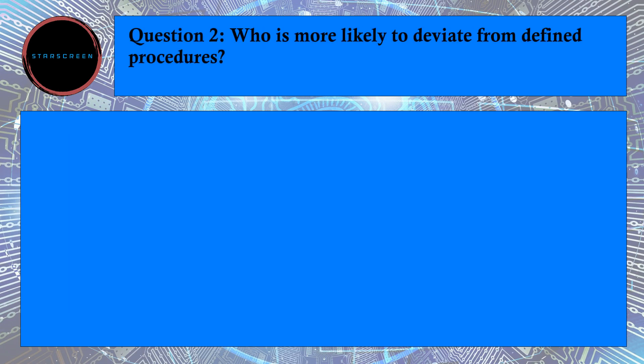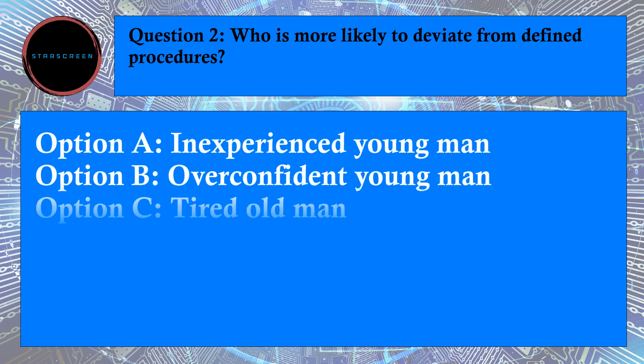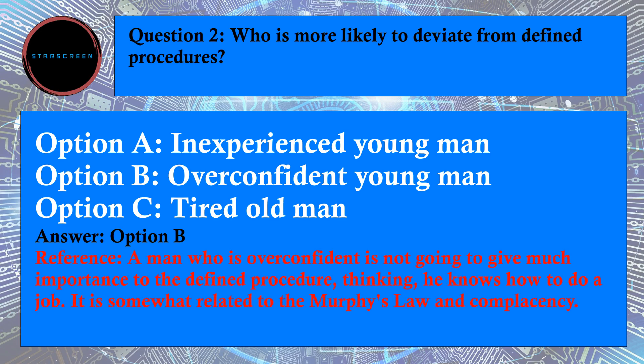Question number 2: Who is more likely to deviate from defined procedures? Option A, Inexperienced Young Man, Option B, Overconfident Young Man, and Option C, Tired Old Man. Correct answer is B, Overconfident Young Man. Its answer is B because a man who is overconfident is not going to give much importance to the defined procedure, thinking he knows how to do a job. It is somewhat related to Murphy's Law and complacency.